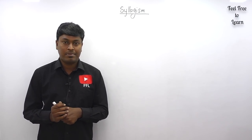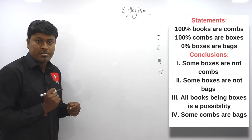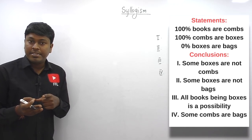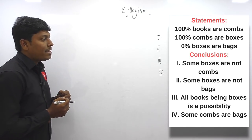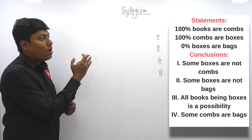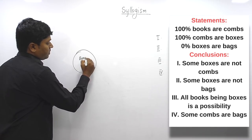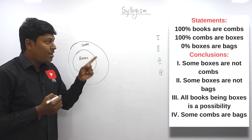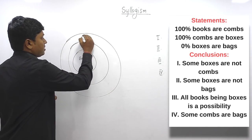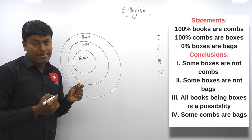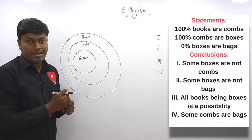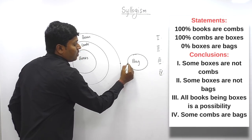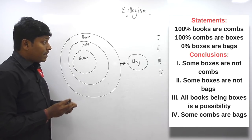Question number one. The statements are: 100% books are combs — 100% means all, so all books are combs. 100% combs are boxes — so all combs are boxes. Zero percent boxes are bags — zero means no, so no boxes are bags, meaning there should not be any connection between box and bag. We draw a bag separately with a line indicating no connection. The Venn diagram for the statement is now drawn.